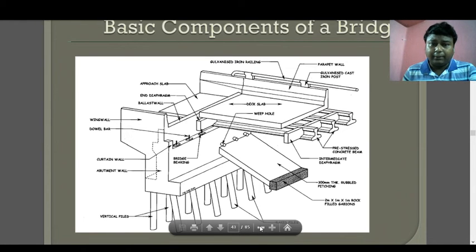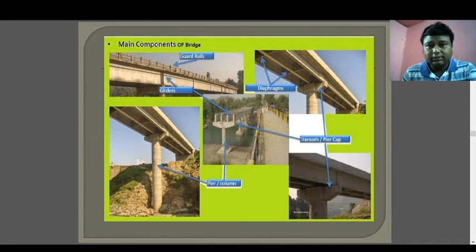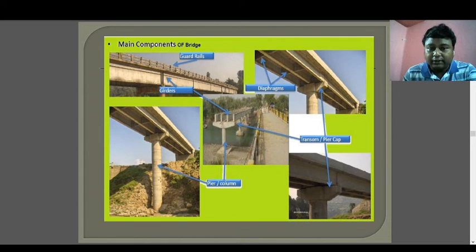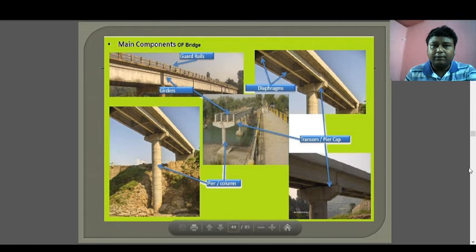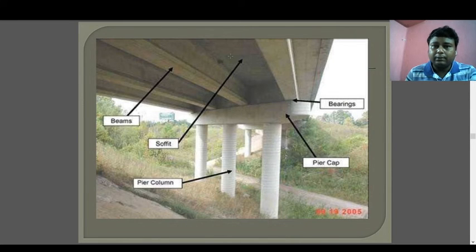The main components of a bridge include: guardrail, girders, diaphragm, and transom or pier cap. There is the pile, pier cap, and pier. The pier cap is a key element. Other components include: pier column, soffit (the below part of the deck), bearing (provided as a joint between the pier cap and deck), beams, and the girder beam.